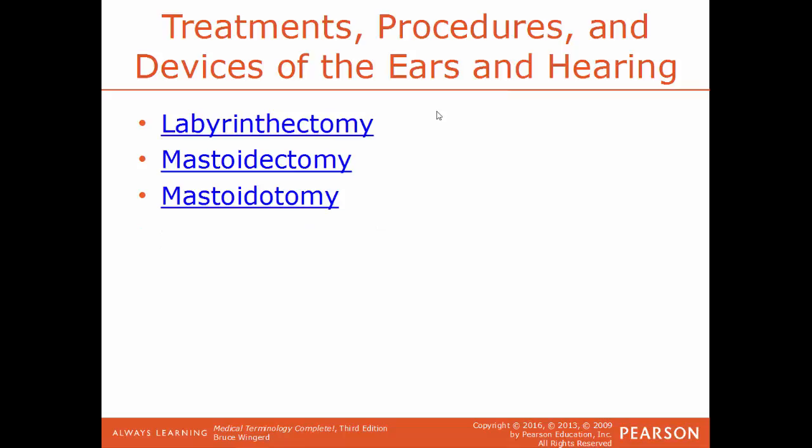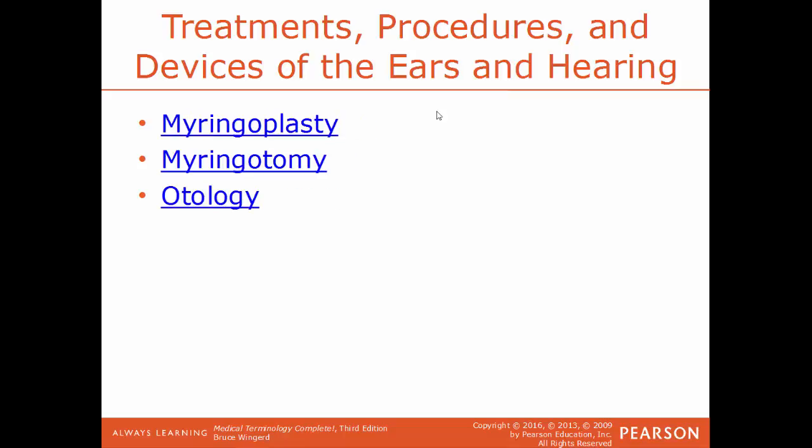Labyrinthectomy is the surgical removal of a labyrinth in the ear. Mastoidectomy is the surgical removal of diseased cells from the mastoid; to do so you need to cut into the mastoid — that process would be mastoidotomy. Myringoplasty is the surgical repair of a perforated eardrum; in order to surgically repair the eardrum you need to be able to cut into it — that would be myringotomy, cutting into the eardrum itself.